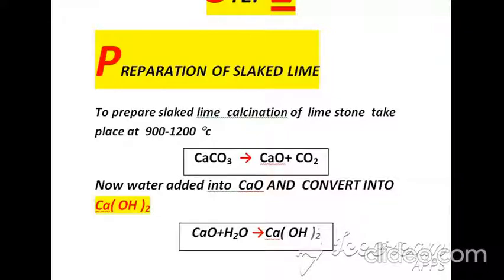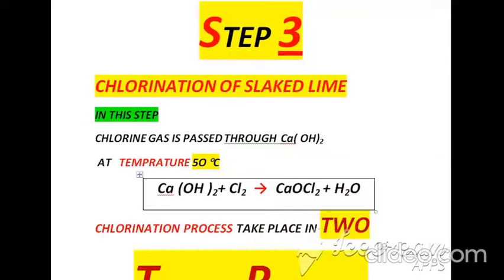In the second stage we add water into calcium oxide and after that we get slaked lime. In the third manufacturing step of bleaching powder, we contact chlorine and slaked lime at 50 degrees centigrade; that process is called chlorination of slaked lime.